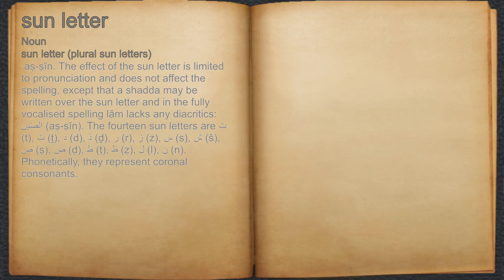The 14 sun letters are T, D, R, Z, S, S, L, N. Phonetically, they represent coronal consonants.